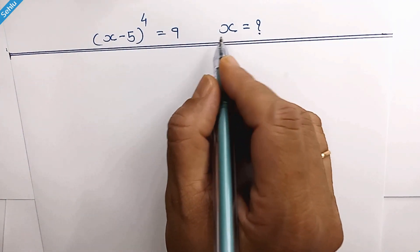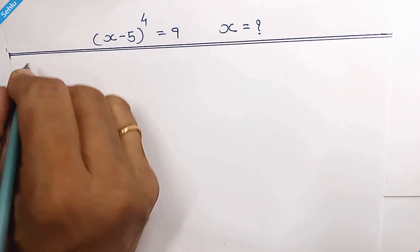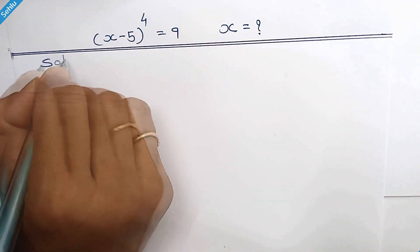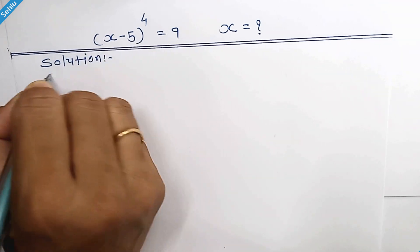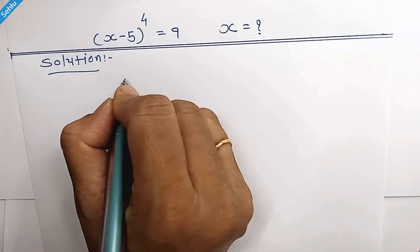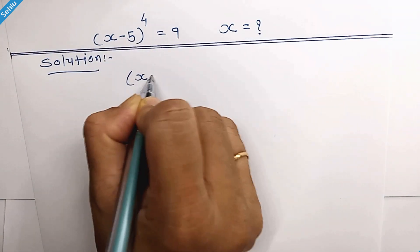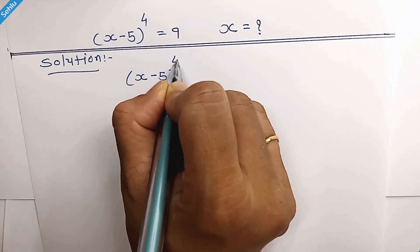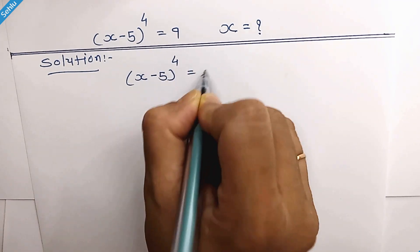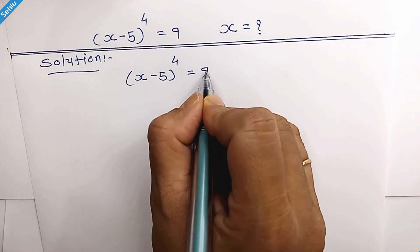Hello friends, let's find all the values of x. The question is: x minus 5, whole to the power 4, is equal to 9.